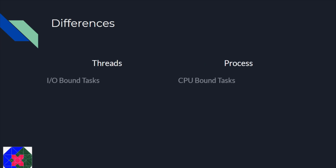Whenever you have some IO bound task, you should use threads. IO bound tasks are those tasks which spend most of their time waiting for IO operations to complete. Whereas whenever you have CPU bound tasks, you should use processes. CPU bound tasks are those tasks which are CPU intensive, which means they spend most of their time using up the CPU.